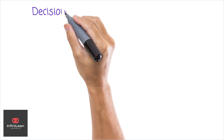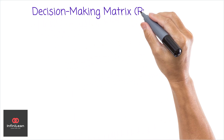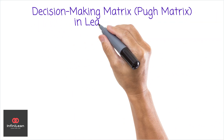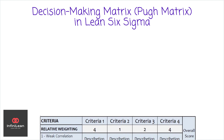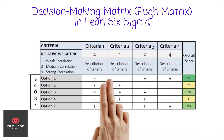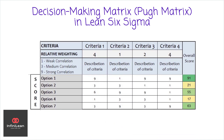Welcome to our channel. My name is Zach from InfiniLean, and I will be the narrator of today's video. Today, we delve into an essential tool in Lean Six Sigma: the Decision-Making Matrix, also known as the Pew Matrix.